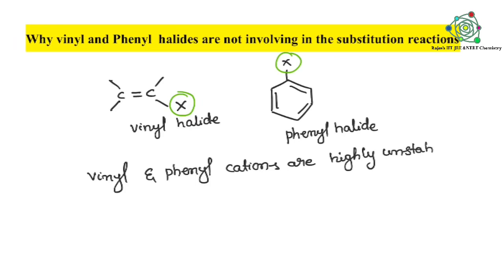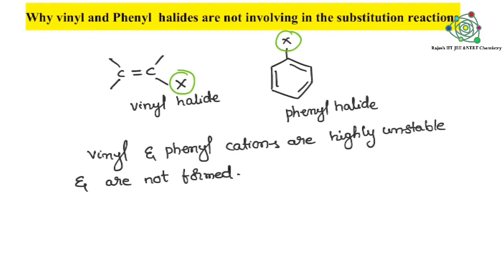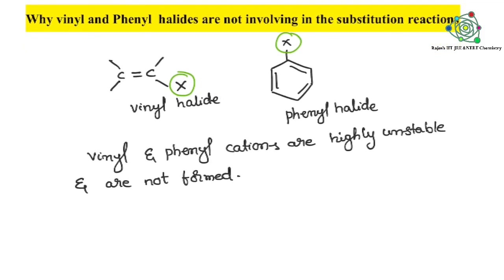Phenyl and phenyl cations are highly unstable and are not formed. Have you got the logic here? So SN1 reaction, anything want to involve, they should form cations - stable cations. But these are not forming stable cations and cations are not forming. So that's why these two are unable to involve in the SN1 reaction.